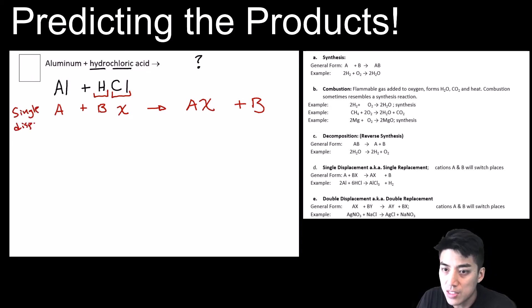This is known as single displacement, because A will switch places with B. So when you make your predictions, you're first going to circle these. A and X will combine to form AlCl3. Remember, you have to cross the charges over again. And then B is hydrogen, but remember, hydrogen is one of the seven diatomics. So you're going to write H2.